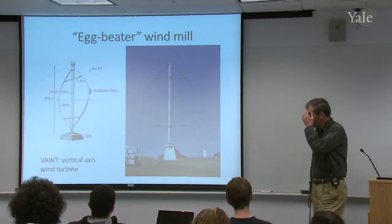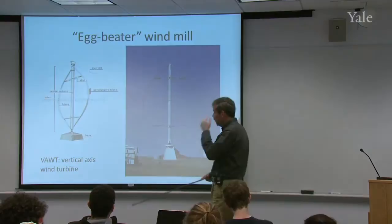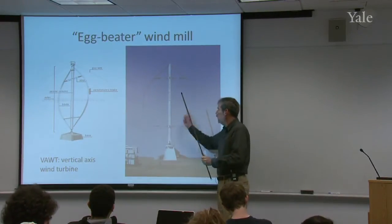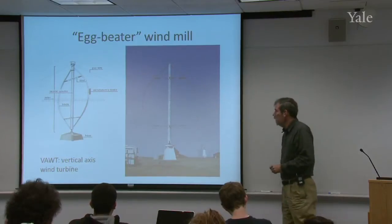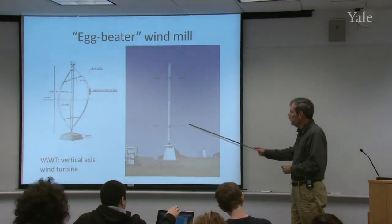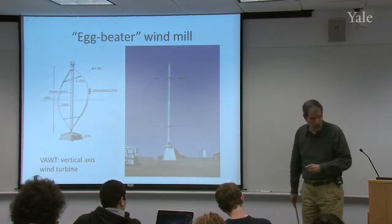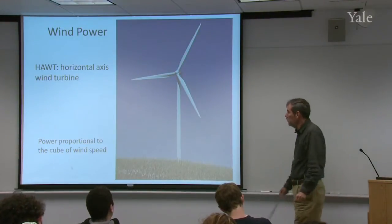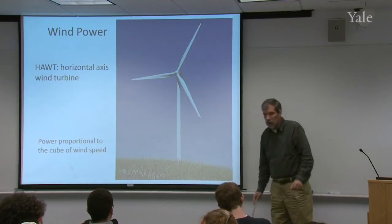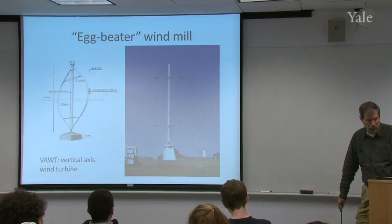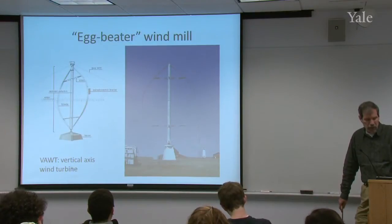There's also this egg beater type. In technical terms, it's called a vertical axis wind turbine. It spins around this way. A number of them have been tried. They are losing favor. By this time, about 90% of wind turbines that are constructed are of the horizontal axis type. So there are not too many of the vertical axis ones left, but in certain circumstances, they do a good job.